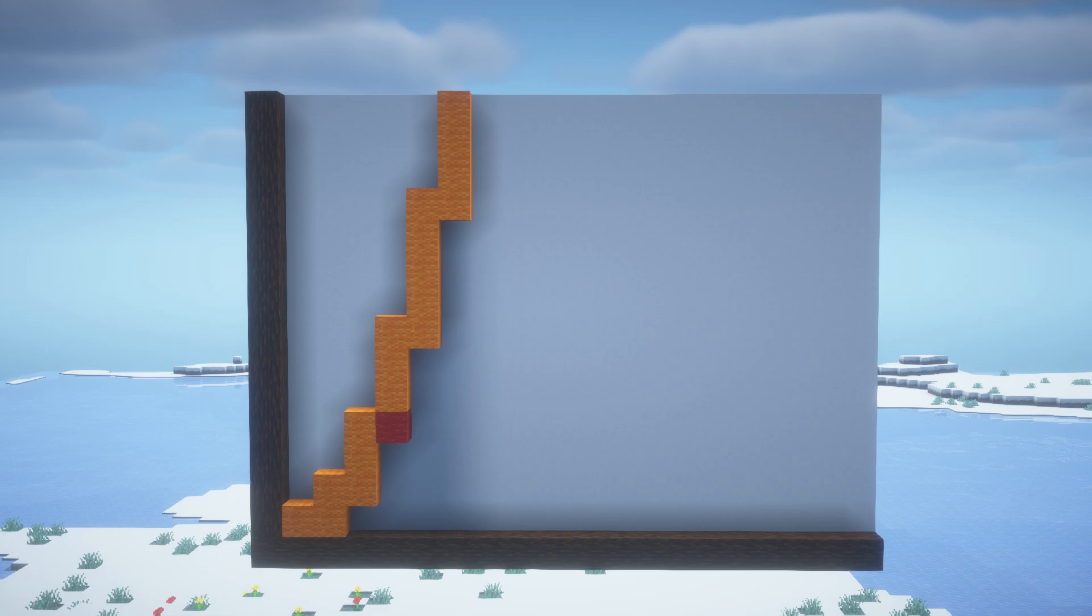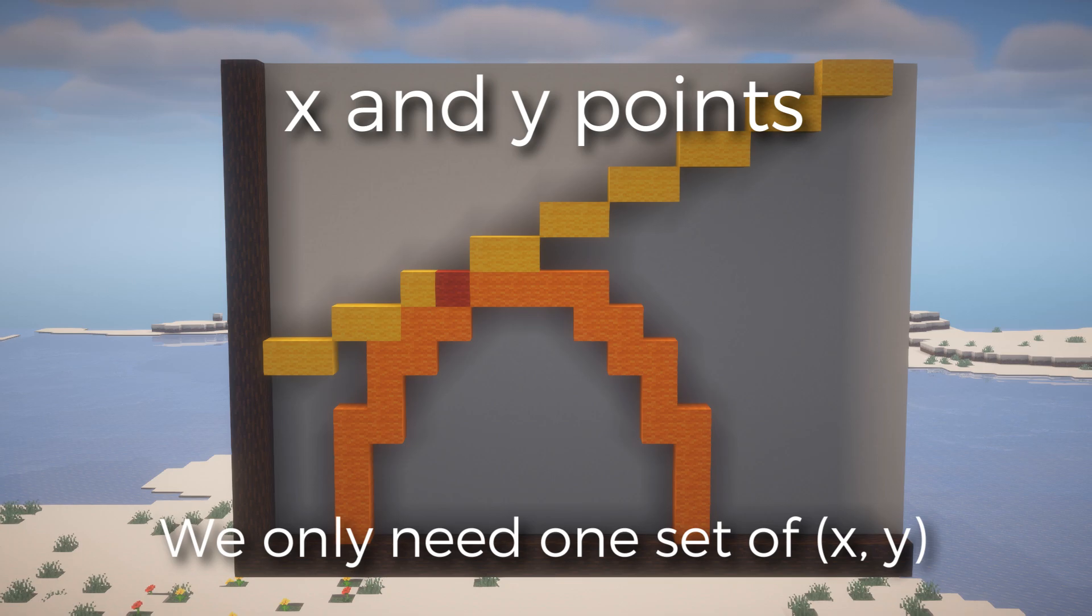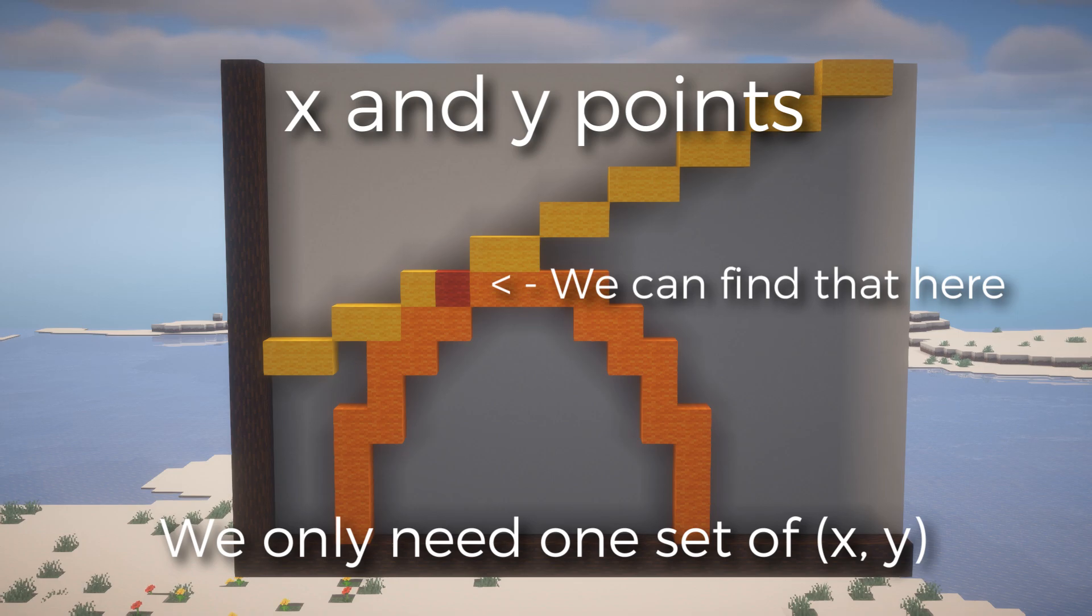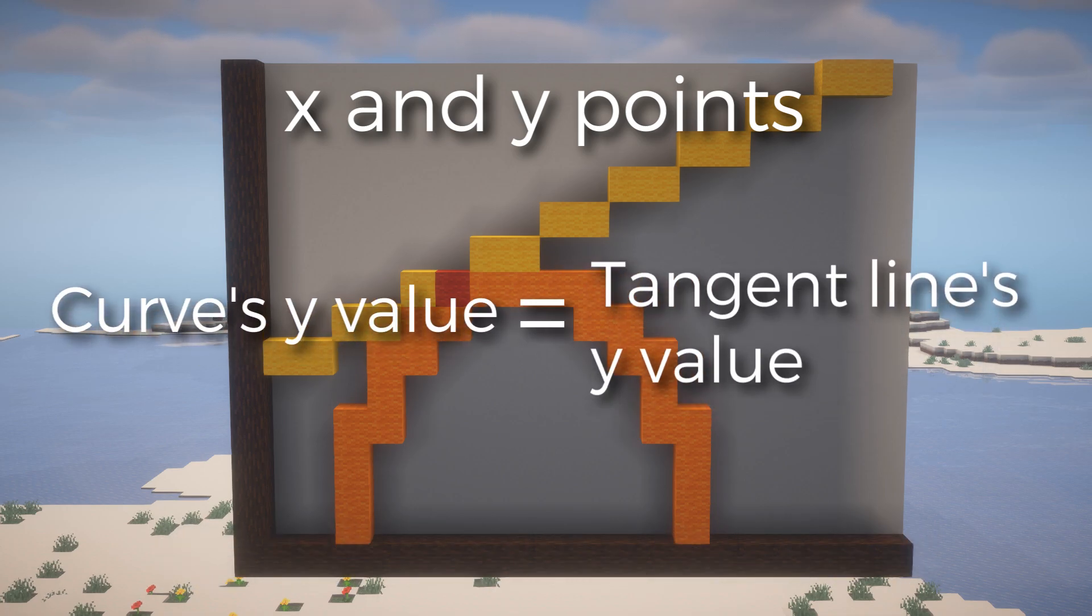Now that we've gotten the slope, let's get the x and y points. Since this is a linear line, all we need to get is one set of x and y points. And lucky for us, the value of x is already given. However, to find the y value, we just have to use that sharing property we talked about again and realize that the curve's y value at that point will be the same as the tangent line's y value at that point as well.